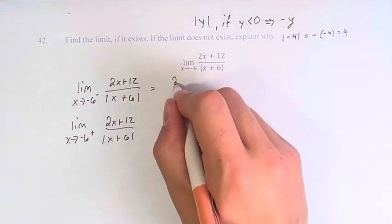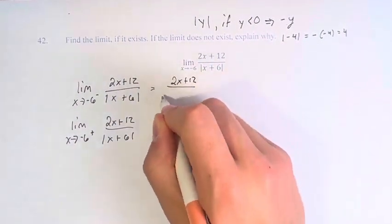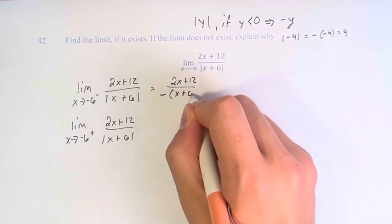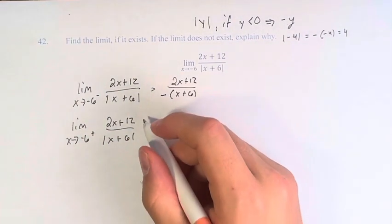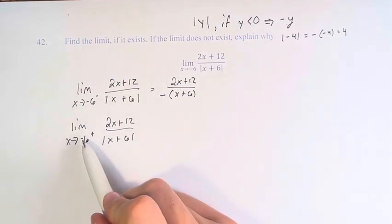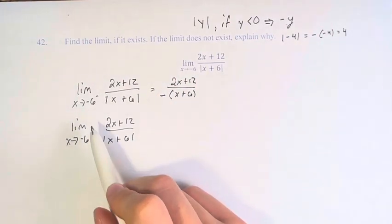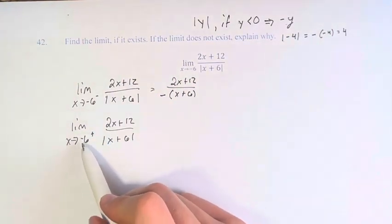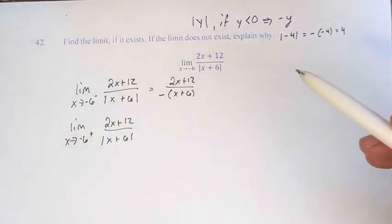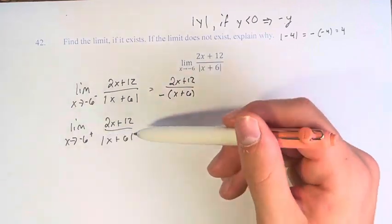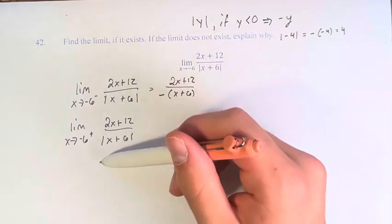So here, this is equal to 2x plus 12 over negative x plus 6. Meanwhile, here, these are values slightly greater than negative 6, which again, for negative numbers, might not be the most obvious, but that's like a negative 5.999999 and so on. So if we add 6 to that number, it's going to be slightly greater than 0.